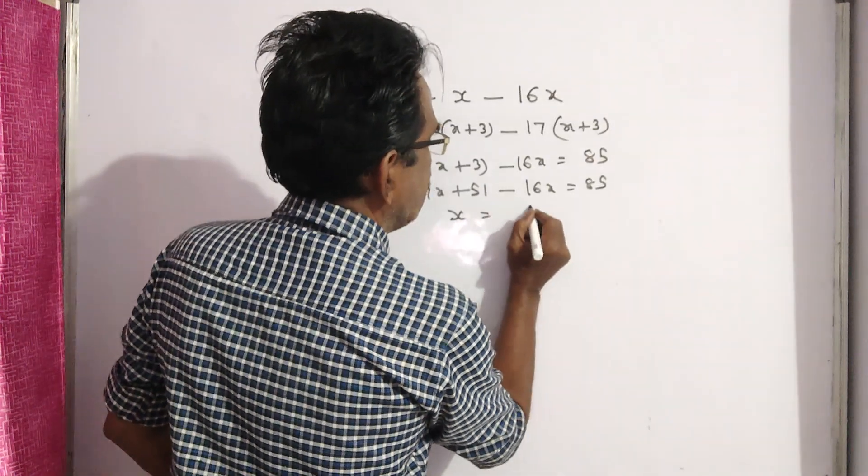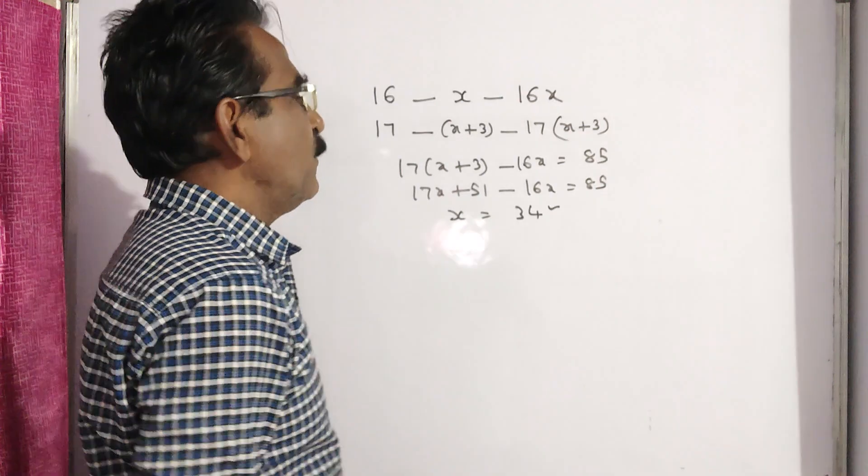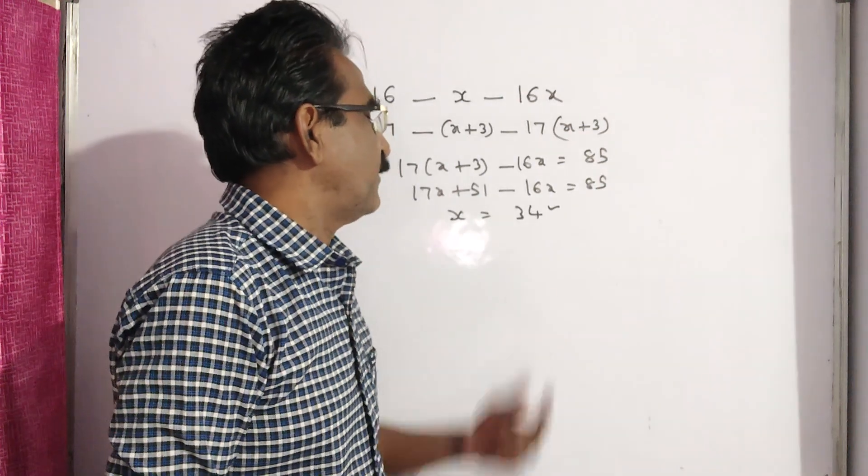85 minus 51, that is 34. X is equal to 34.